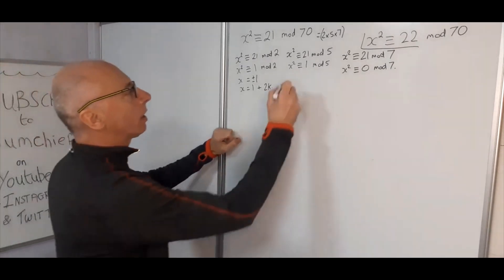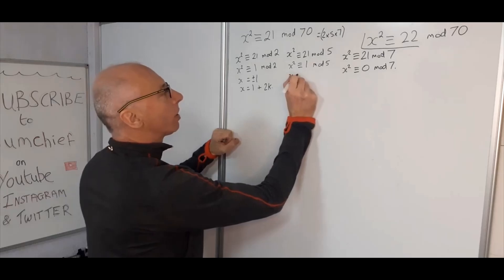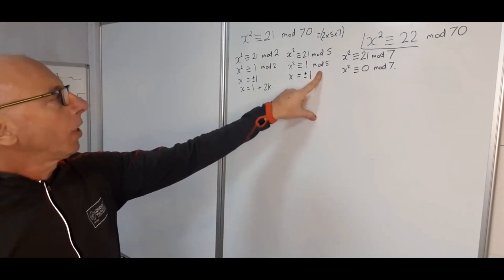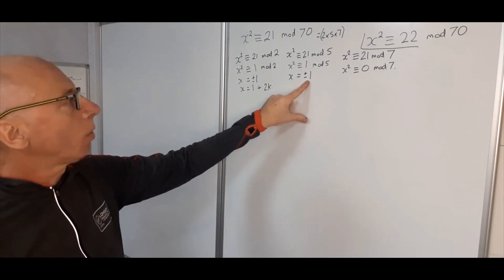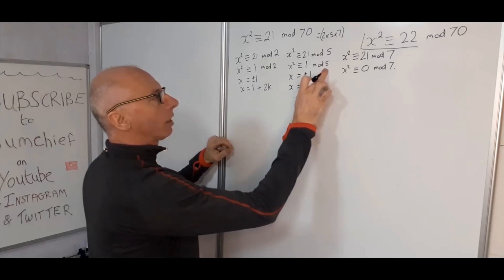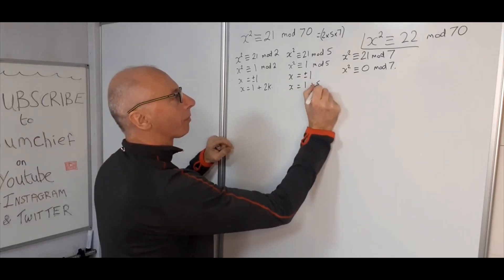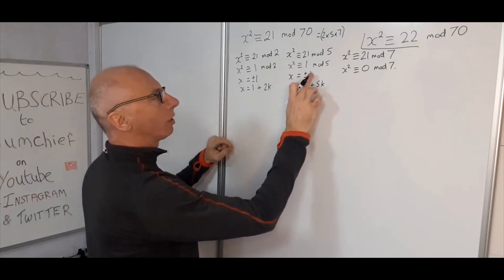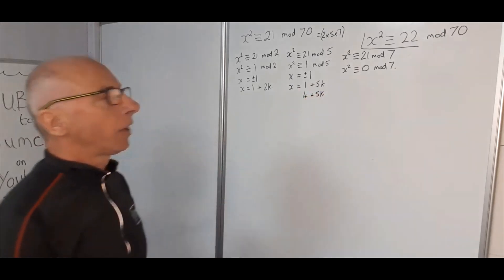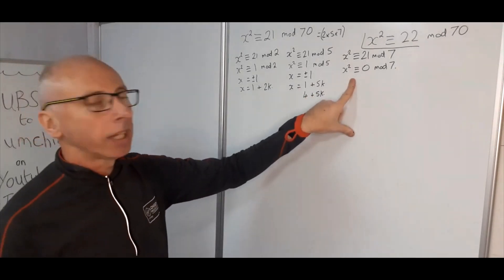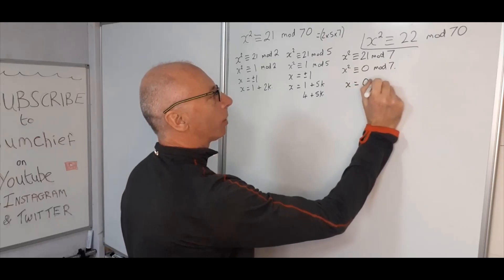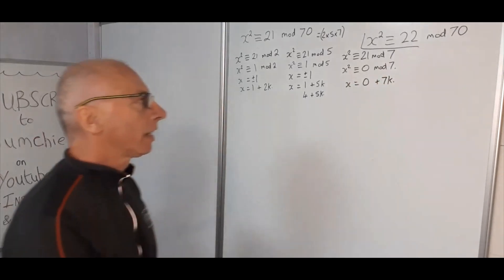For x squared congruent with 1 mod 5, we again get plus or minus 1. Here x equals 1 plus 5k and also x equals 4 plus 5k, since minus 1 mod 5 equals 4. For x squared congruent with 0 mod 7, the only solution is x equals 0 plus 7k.